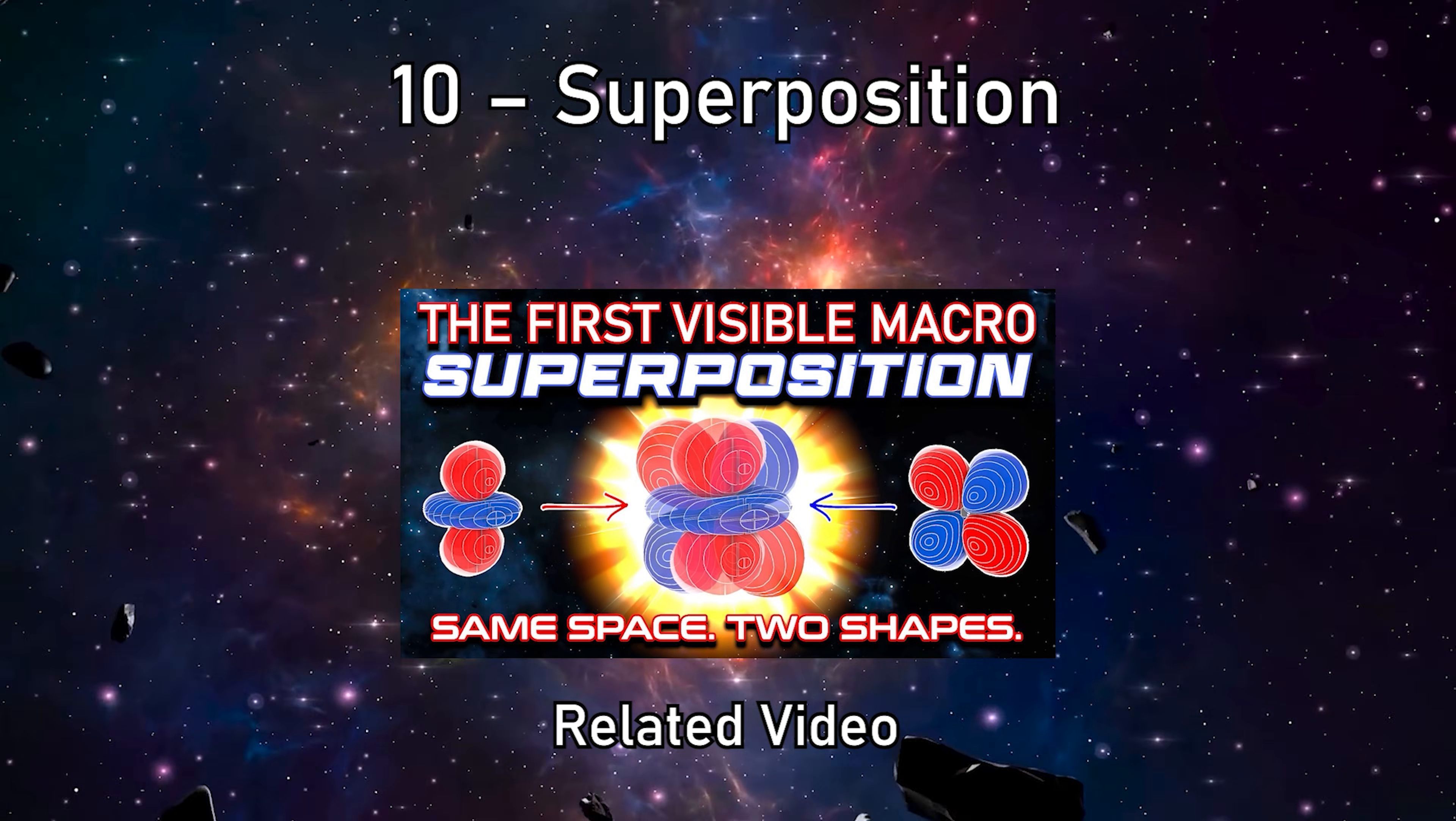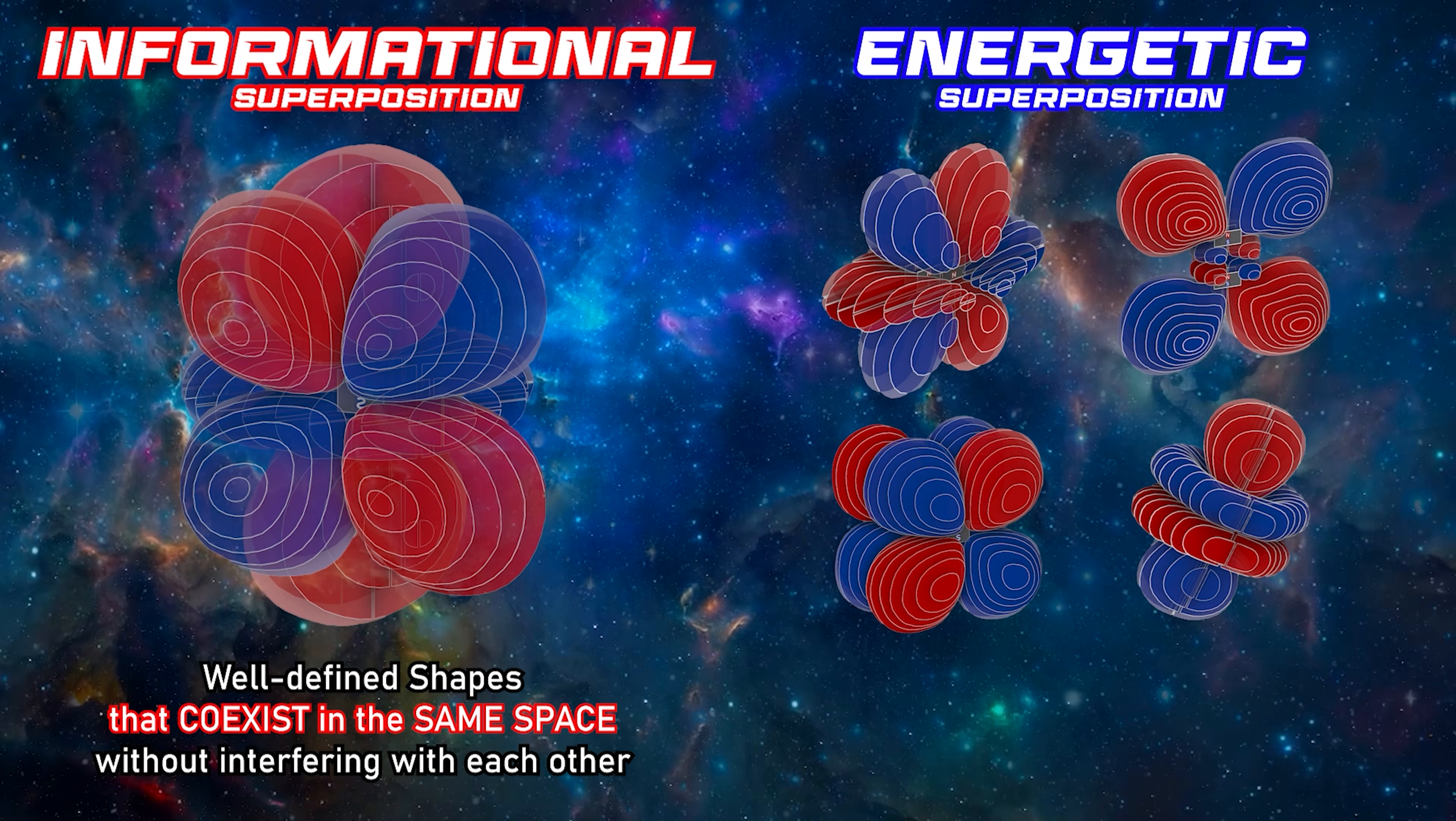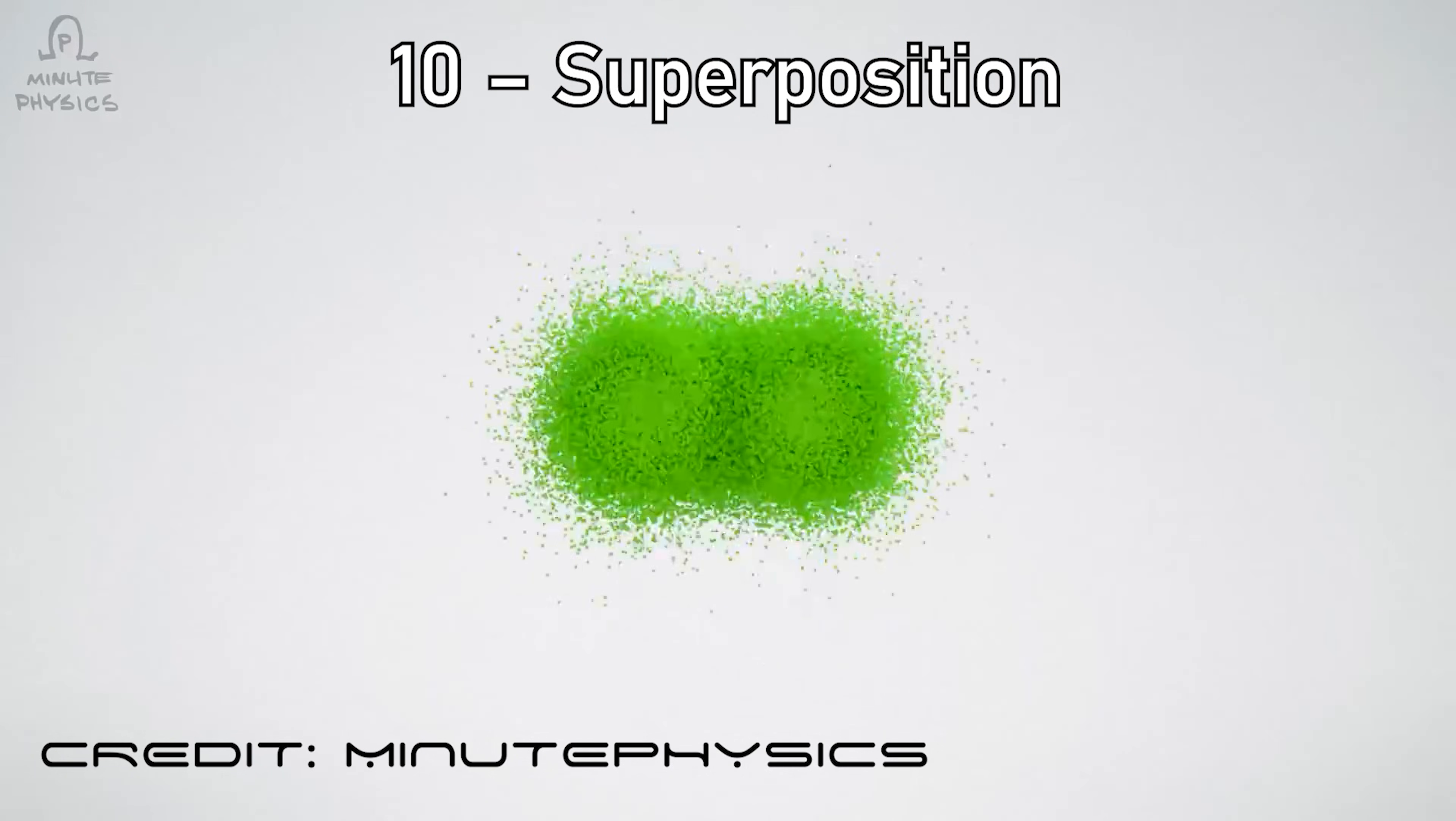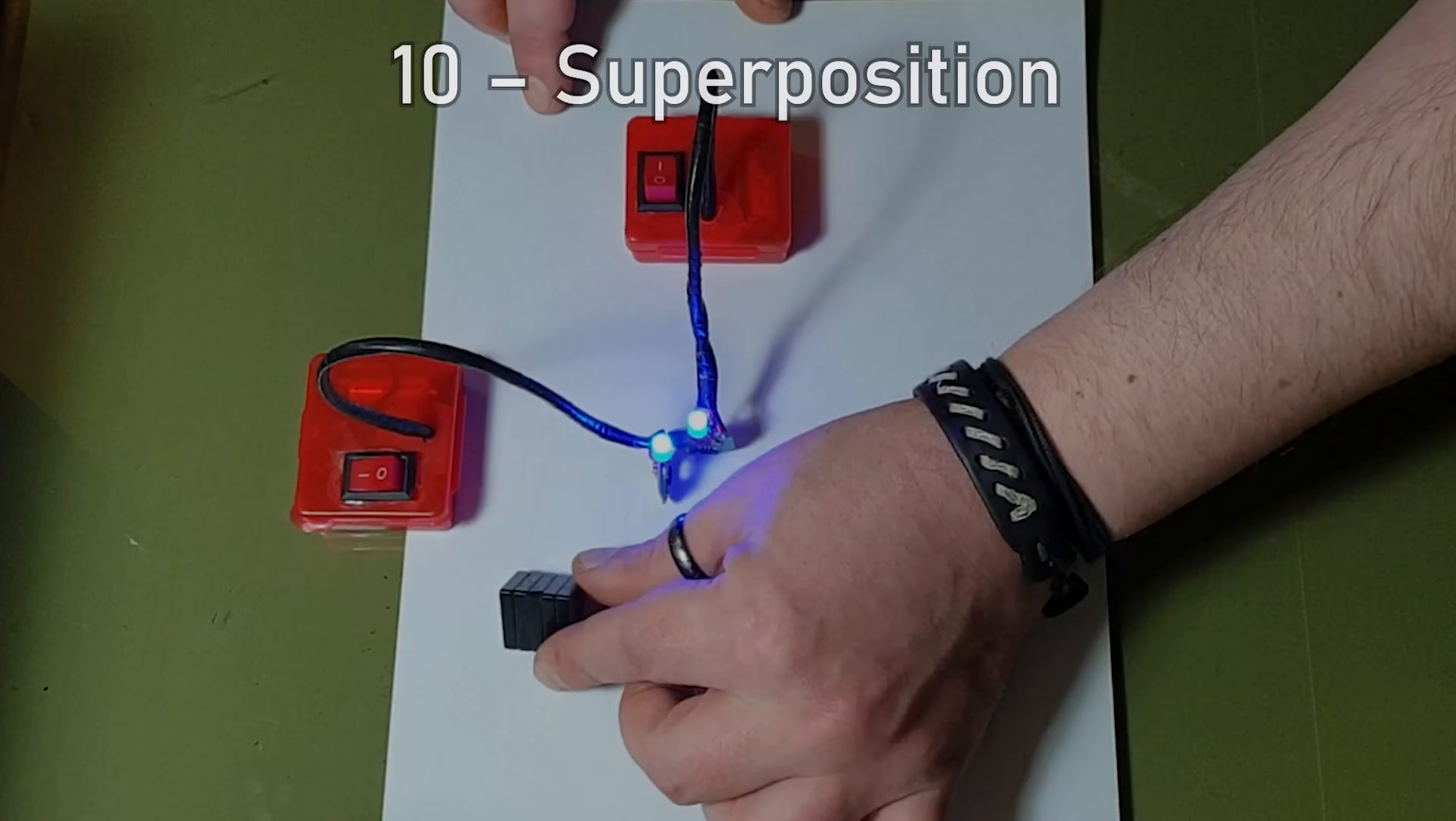10. Superposition. Quantum superposition can be compared in two ways. As informational superposition, linked to what is being measured. And as energetic superposition, linked to what actually interacts. In this classification, intrinsic superposition of the field prior to measurement is not explicitly considered, as it is implicitly present. The analysis focuses on the moment after simultaneous measurements, when the system manifests distinct states depending on the type of interaction.